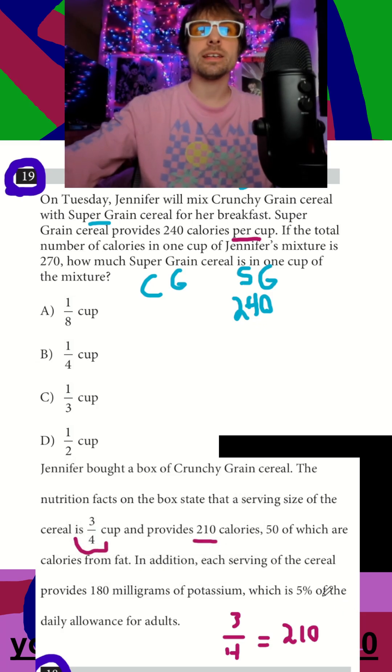And honestly, the easiest way is, how do I get 3 fourths to 1? And that's going to be if I multiply this by 4 thirds. And I could multiply this by 4 thirds, and that will tell me how much is in a full cup. And I think that's going to be 280 for Crunchy Grain now.